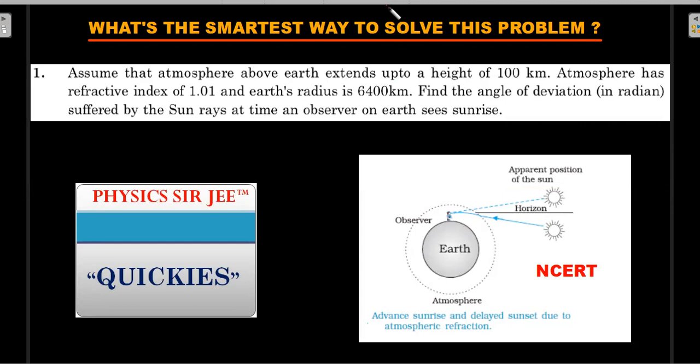In actuality, Earth's atmosphere doesn't have a uniform refractive index. There are layers of atmosphere - troposphere, ionosphere, etc. - where the refractive index keeps changing, so the ray actually goes along a curved path. This is an idealized version.